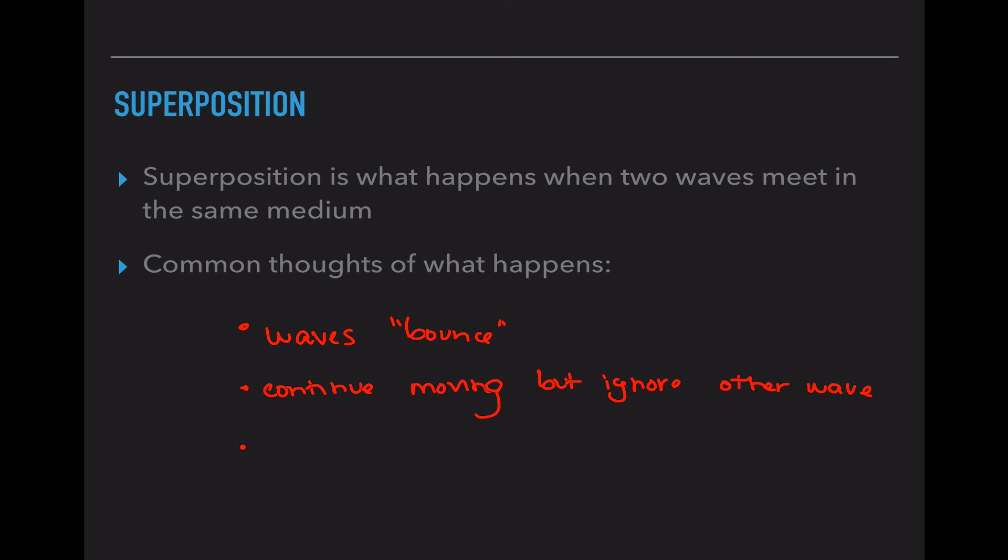Another misconception is that they continue moving in the same direction but ignore each other completely. And the last misconception is that the larger wave overtakes the smaller wave. What that means is that essentially the larger wave just bullies the smaller wave around and it's like the smaller wave was never there. So these are common thoughts of what happens but they're actually all incorrect.